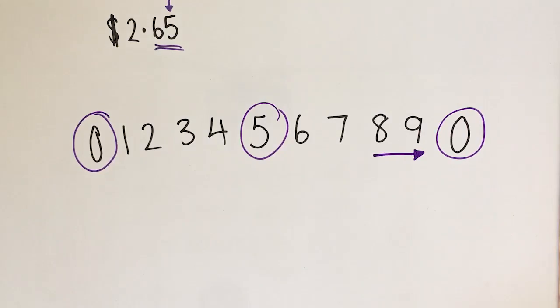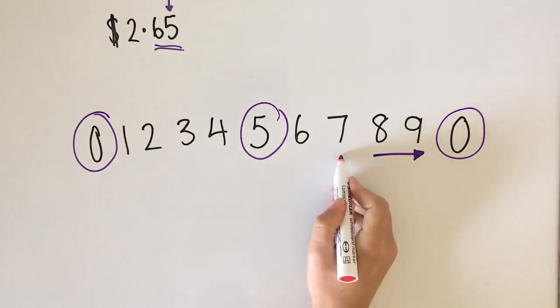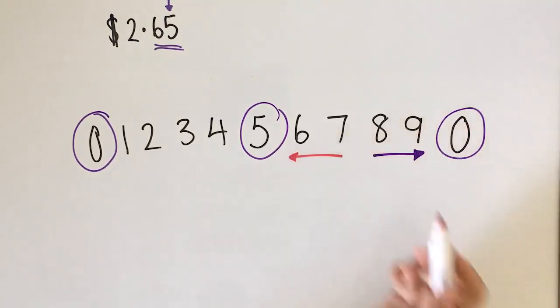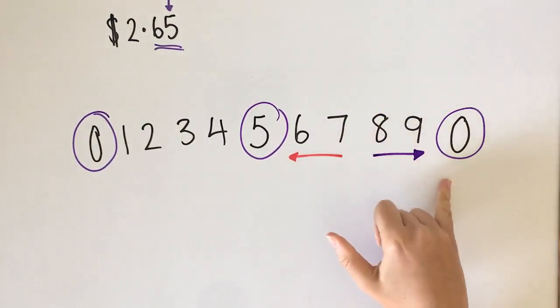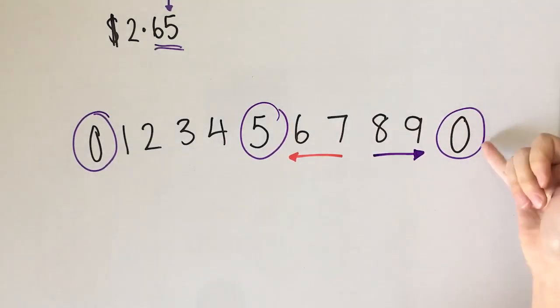If it's six or seven we round down to the five because you can see that that is halfway between five and the next ten.